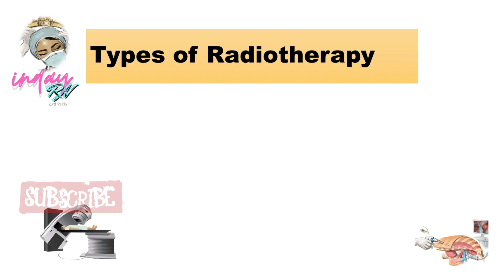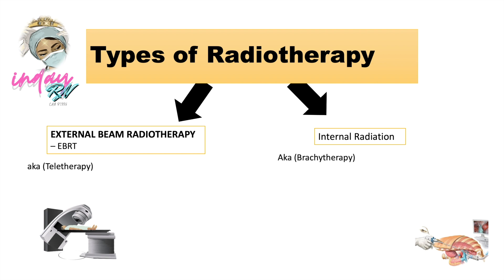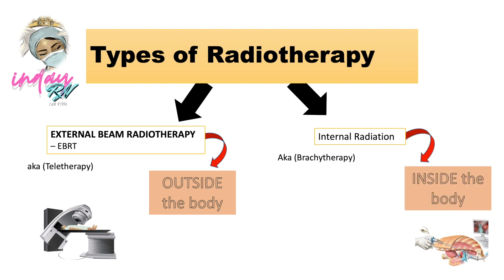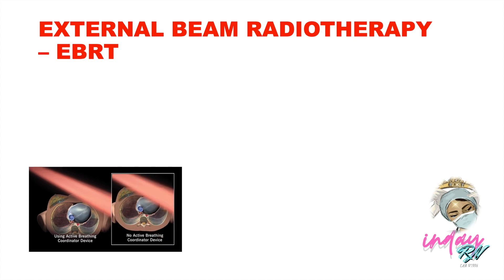There are two types of radiotherapy. Number one is external beam radiotherapy (EBRT), also known as teletherapy, which is done outside the body. The other is internal radiation, called brachytherapy, which is done inside the body. In internal radiation, beams are introduced into the body via sealed and unsealed implants.